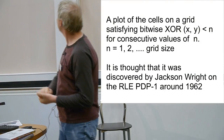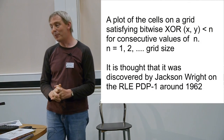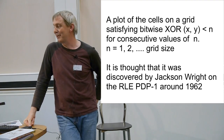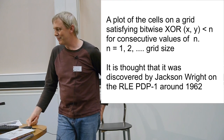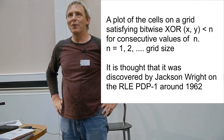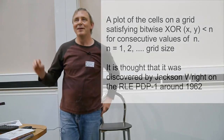I'm not sure how many people know about munching squares. If you go on to the Wolfram demonstration site, this is their explanation of it. It's a plot of the cells on the grid satisfying bitwise exclusive OR operations less than n for consecutive values of n. It was thought this was discovered by Jackson Wright on the RLE PDP-1 around 1962. One of the great things about the CAS conference is that I haven't got a clue who Jackson Wright is, but by the end of tomorrow, I'm absolutely certain someone will have told me who he was, and someone else will have explained what a PDP-1 was.